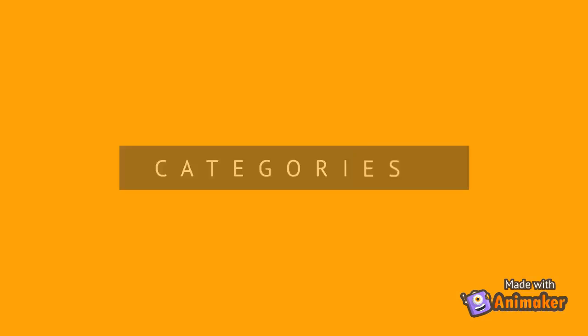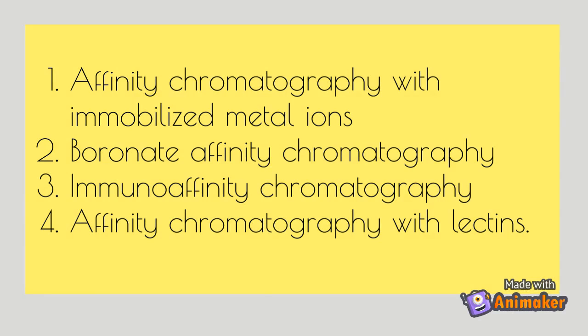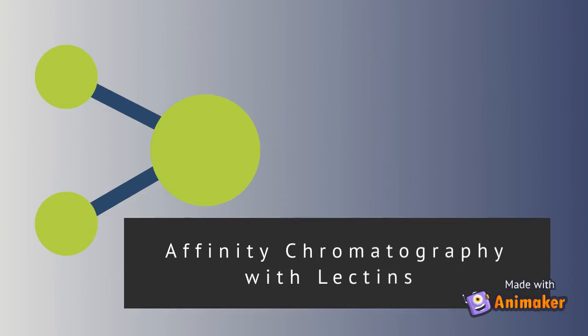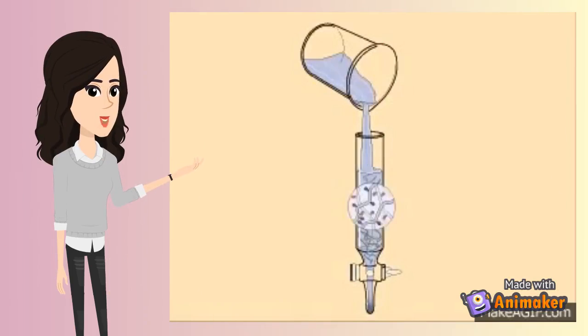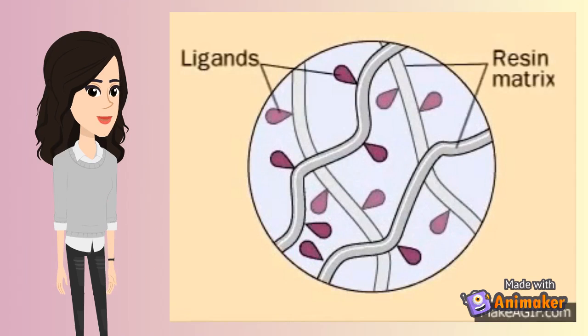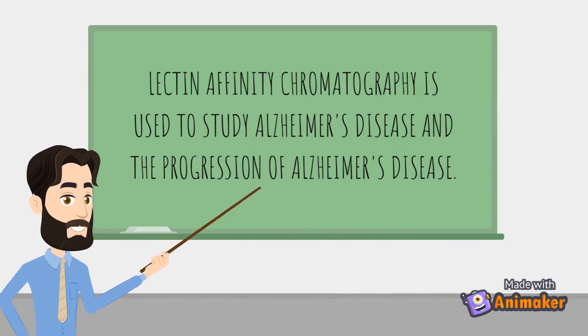Affinity chromatography can be divided into several categories depending on the type of ligand that is employed. Lectins are non-immune system proteins and are able to bind sugar molecules. It is the most commonly used specific purification procedure for glycoprotein. Lectin affinity chromatography is used to study Alzheimer's disease and its progression.